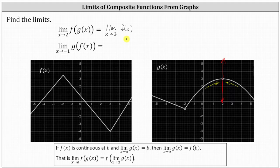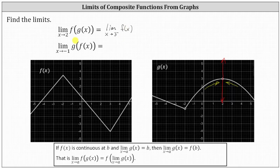Before we do that, let's look at the graph of g(x) again. Notice as we approach the y-value of positive three, we're approaching from below — from y values that are less than three. This means we could also write this as a one-sided limit: the limit as x approaches three from the left of f(x). This idea will be important when the outer function has a discontinuity.